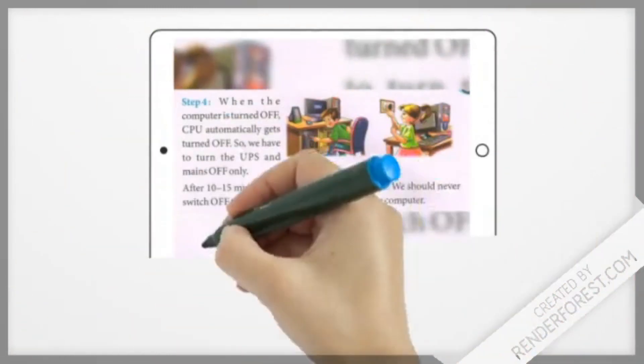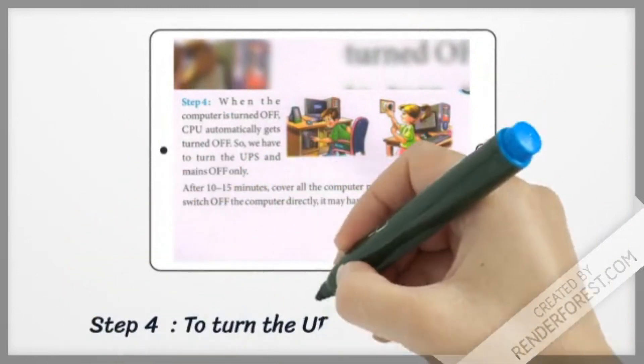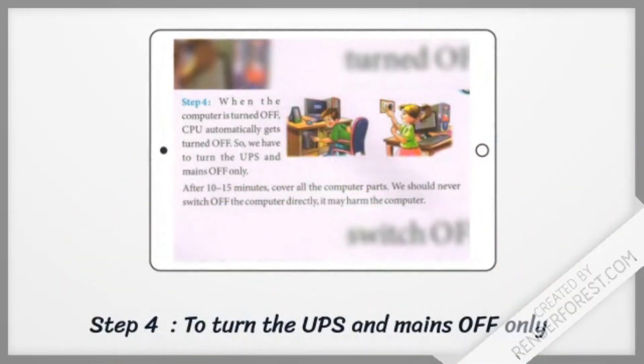Step 4: When the computer is turned off, CPU automatically gets turned off. So we have to turn the UPS and mains off only.